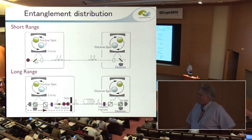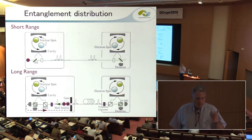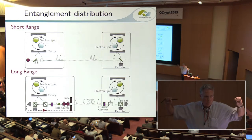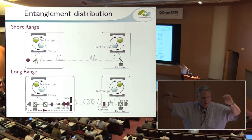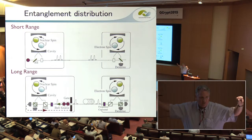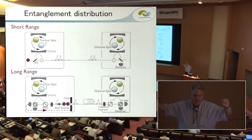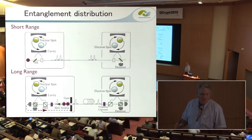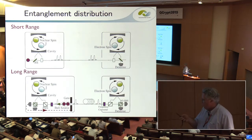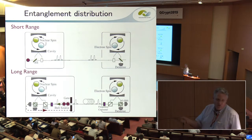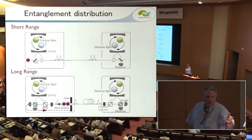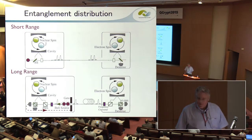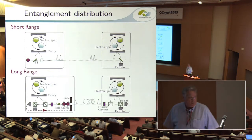For long-range entanglement, Nicola's comment about memories is important. Depending on the distance, you can keep the information in the electron spins — preferable if the electron spin lifetime is sufficient — or transfer it directly into the nuclear spin, which has longer coherence times. In diamond the electron spin coherence time of 100 milliseconds is possible under extreme pulse sequences, and NV center nuclear spin coherence times are of the order of seconds.